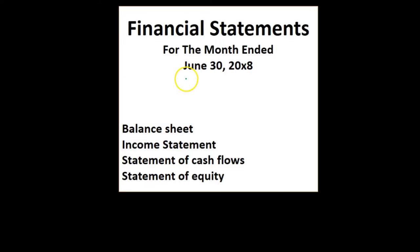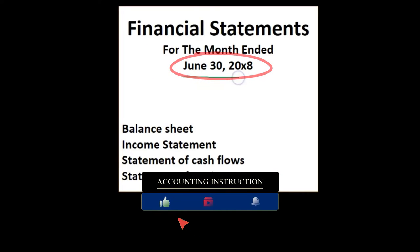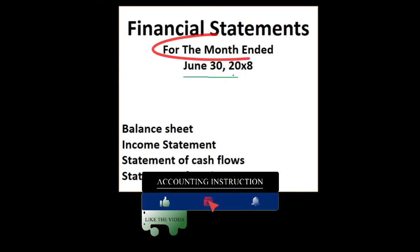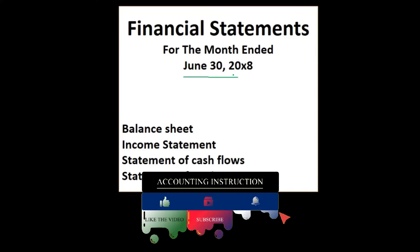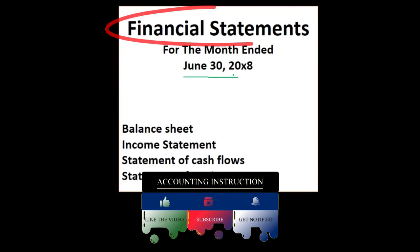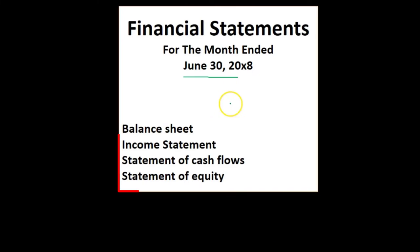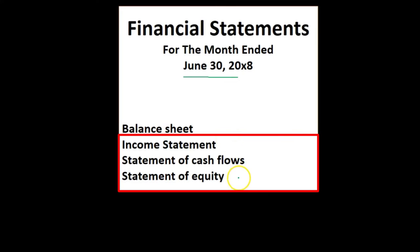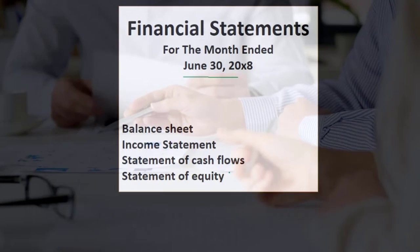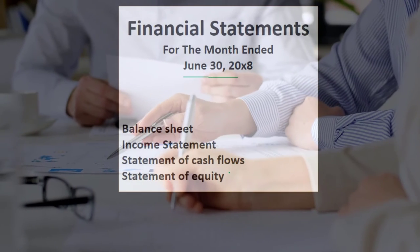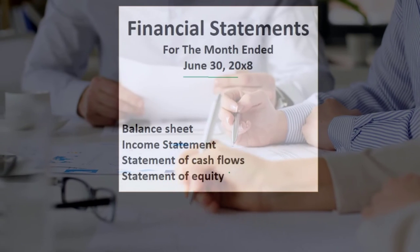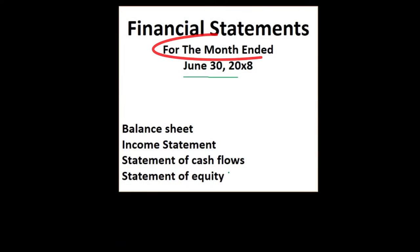For example, here we have June 30th, 2008, and we have 'for the month ended.' That means that for the financial statements that have a timeframe — that being the income statement, the statement of cash flows, and the statement of equity — which have a beginning and an end showing activity during that time period, will be for that month ended.